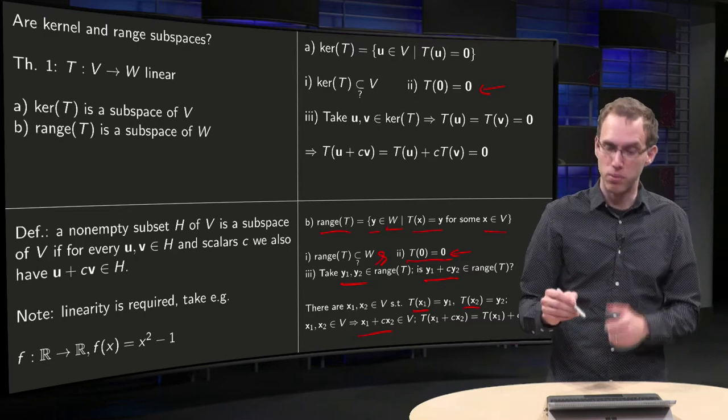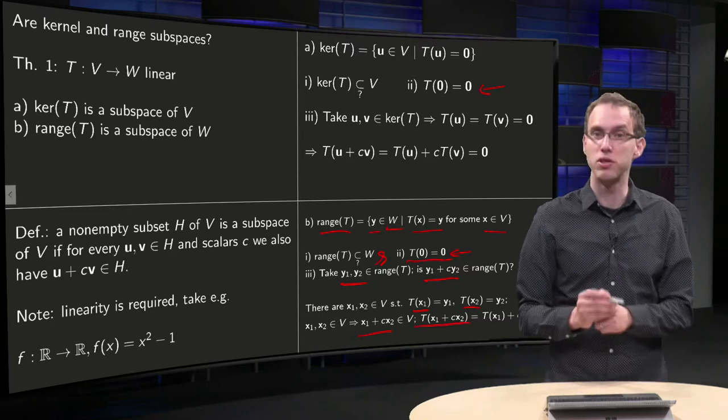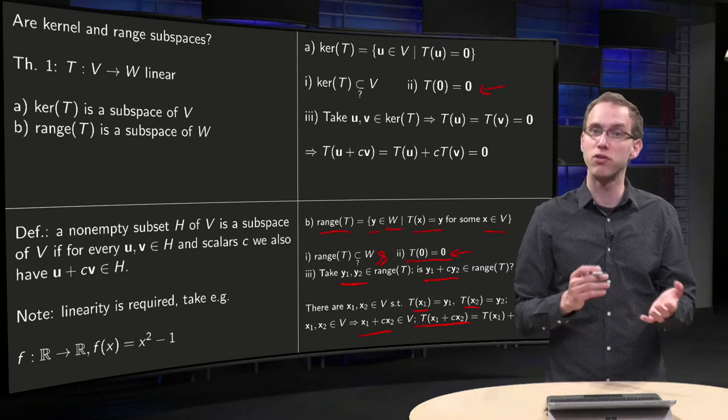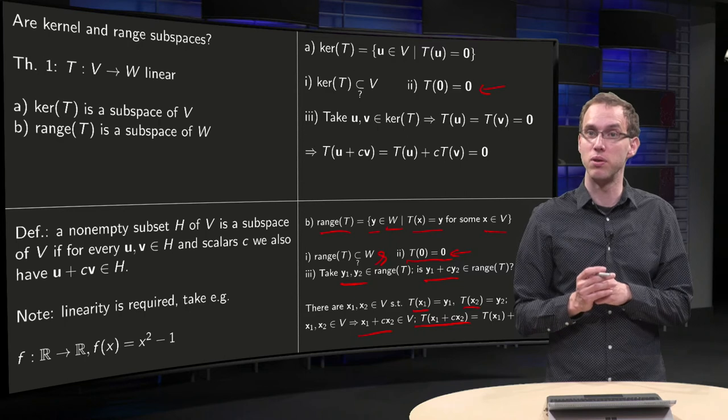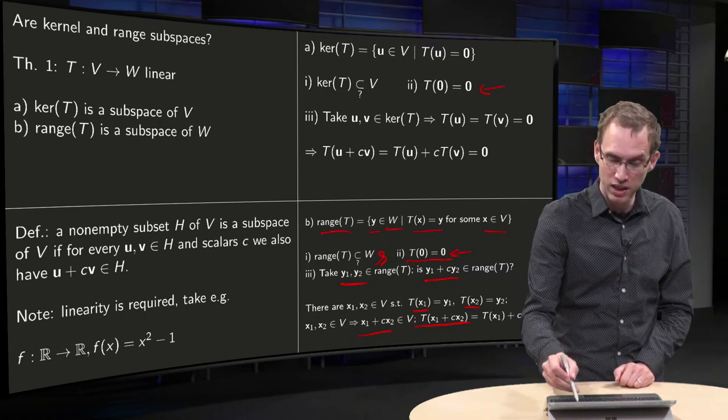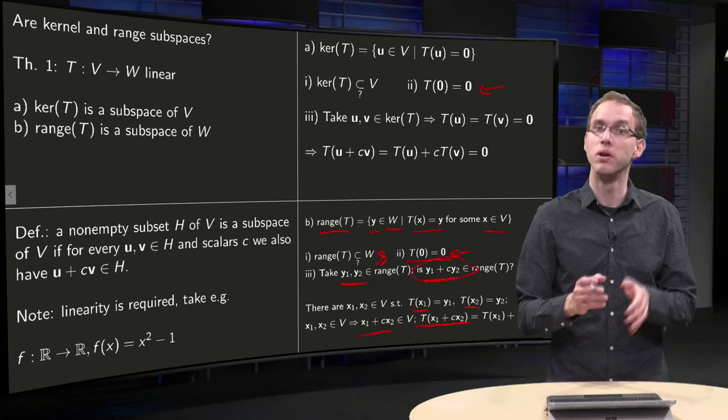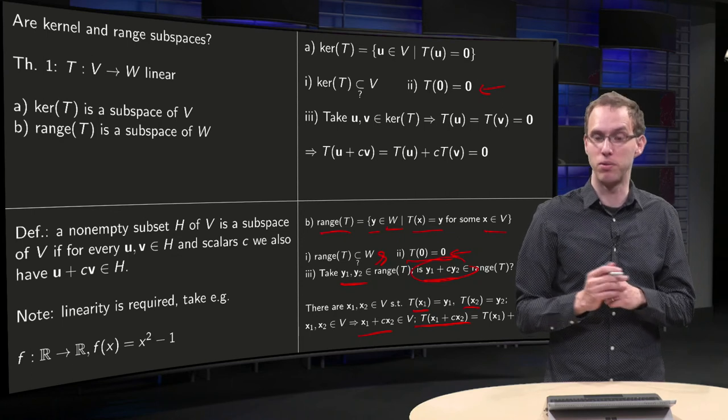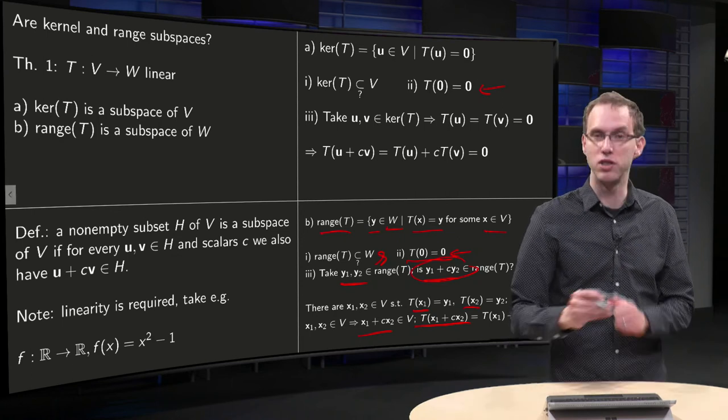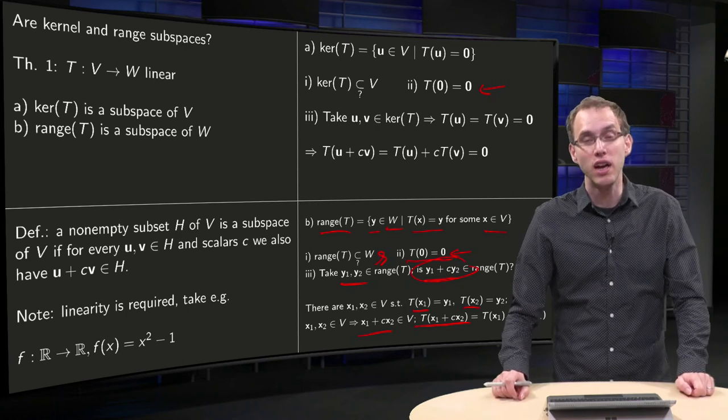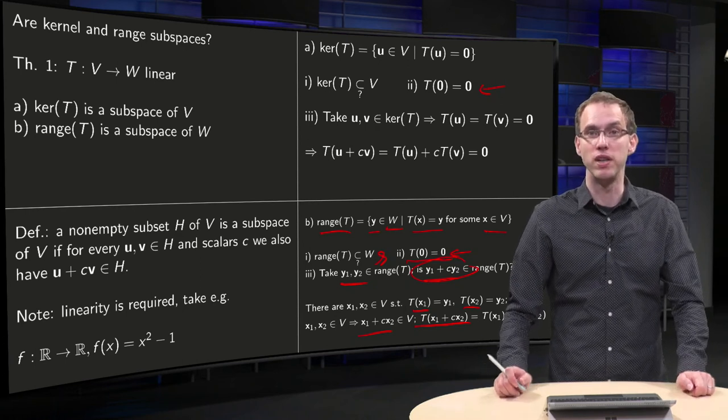And if you now compute T of x1 plus c times x2, you get T of x1 plus c times T of x2 equals y1 plus c times y2. So that means that you can indeed reach y1 plus c times y2 by the vector x1 plus c times x2. Which means that the last property is also satisfied, so you see that the range of T is also a subspace.